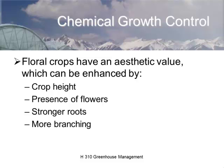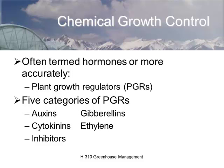Talking about chemical growth control, we have to remember that floriculture crops have an aesthetic value, and we can enhance that aesthetic value by managing plant height, whether or not it has flowers, promoting stronger roots, branching, and giving it a fuller plant. We can do this with chemical plant growth regulators, and also with temperature modification using DIF, which we discussed last week, and we'll talk about thigmotropic responses towards the end.